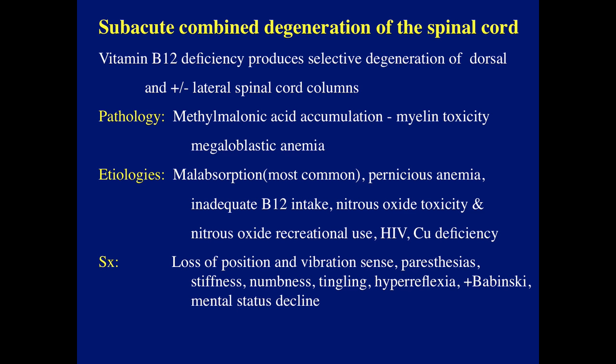This is subacute combined degeneration of the spinal cord — vitamin B12 deficiency, which produces selective degeneration of dorsal and plus/minus lateral spinal cord columns. Pathology is related to methylmalonic acid accumulation causing myelin toxicity and megaloblastic anemia. Etiology: most commonly malabsorption, pernicious anemia, inadequate B12 intake, nitrous oxide toxicity (including recreational), HIV, and copper deficiency. Symptoms: loss of position and vibration sense, paresthesia, stiffness, numbness, tingling, hyperreflexia, positive Babinski, and mental status decline.